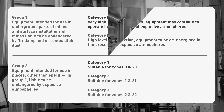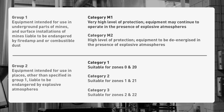Equipment intended for use in ATEX environments is split into two groups and five categories depending upon the level of protection required. Group 1 equipment is intended for use in underground parts of mines and surface installations of mines liable to be endangered by fire damp and/or combustible dust. Within Group 1, there are two equipment categories: Category M1, where the equipment must be able to operate safely even in the presence of explosive atmospheres, and Category M2, where the equipment needs to be de-energised in the presence of explosive atmospheres.